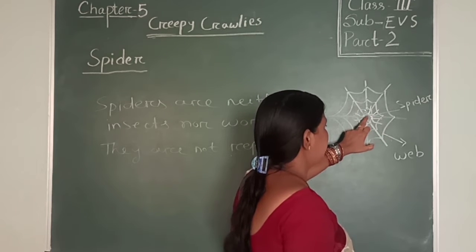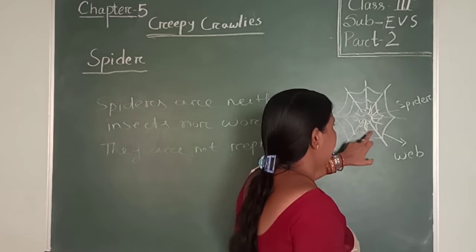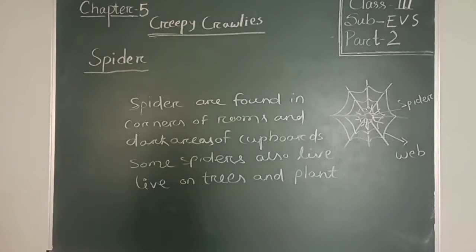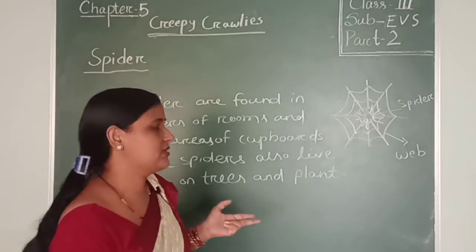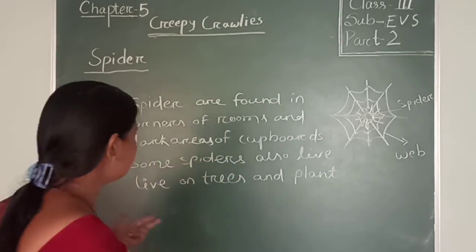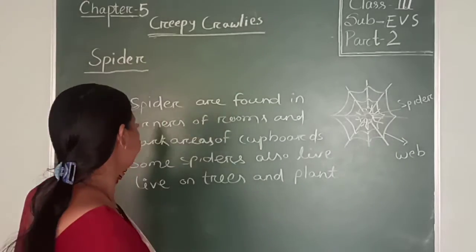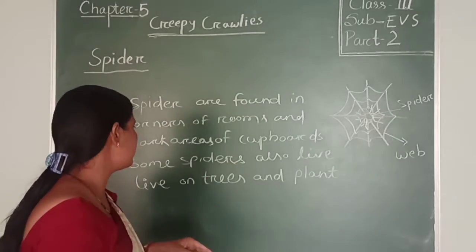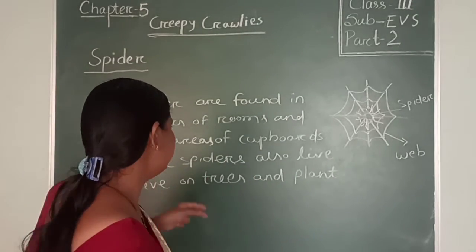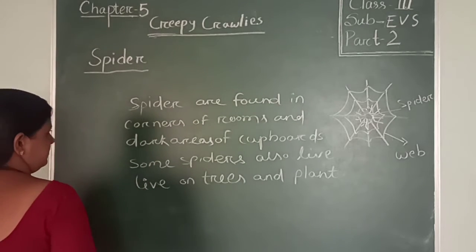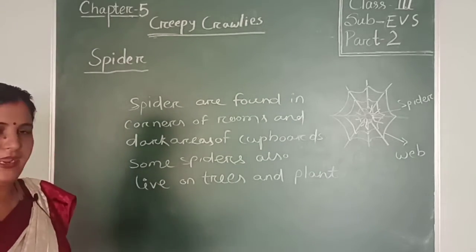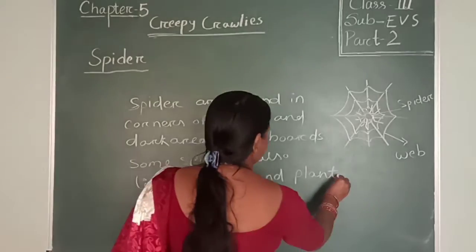This is the spider and this is the web. Spiders are of different types and almost they are found everywhere. Spiders are found in corners of rooms and dark areas of cupboards. Some spiders also live on trees and plants.